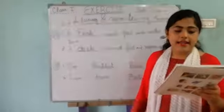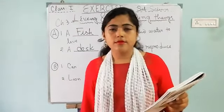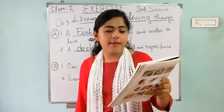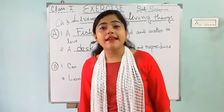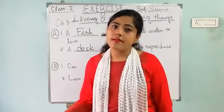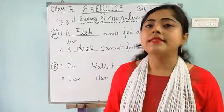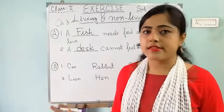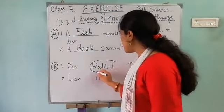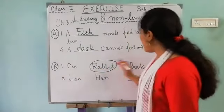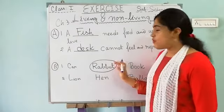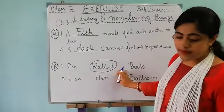Circle the odd one out. First group: car, rabbit, and book. Car is a non-living thing and book is also a non-living thing. But rabbit is a living thing, so rabbit is the odd one. We circle rabbit.